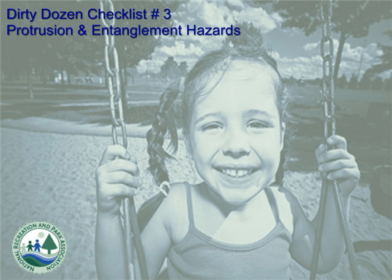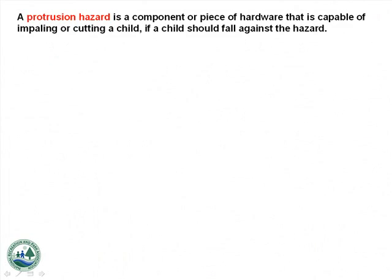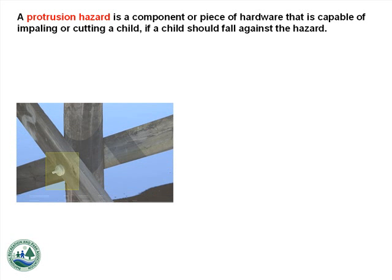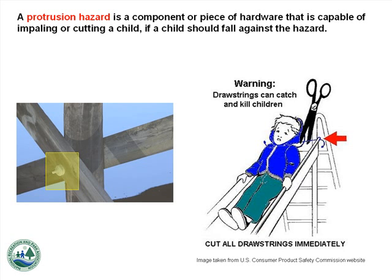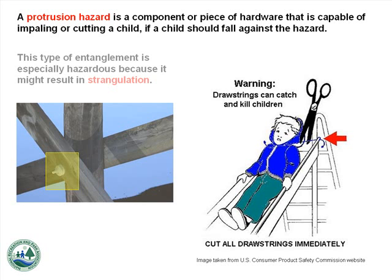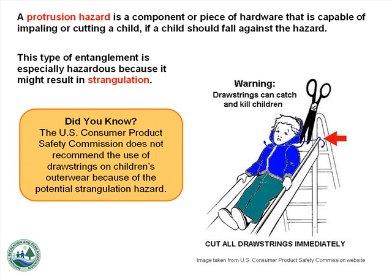Number 3: Protrusion and Entanglement Hazards. A protrusion hazard is a component or piece of hardware that is capable of impaling or cutting a child if a child should fall against it. Some protrusions are also capable of catching strings or items of clothing worn around a child's neck. This type of entanglement is especially hazardous because it might result in strangulation. The U.S. Consumer Product Safety Commission does not recommend the use of drawstrings on children's outerwear because of the potential strangulation hazard.